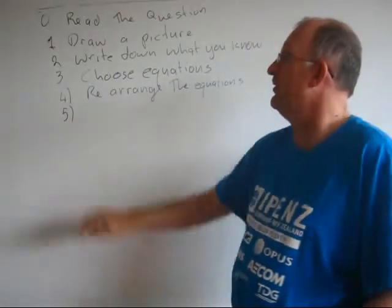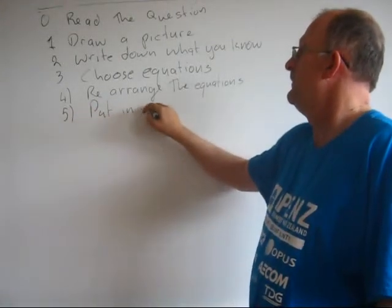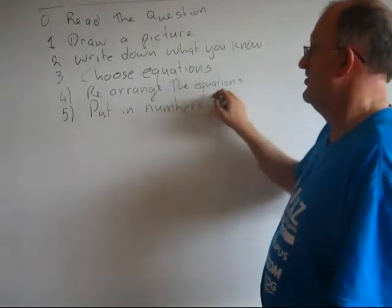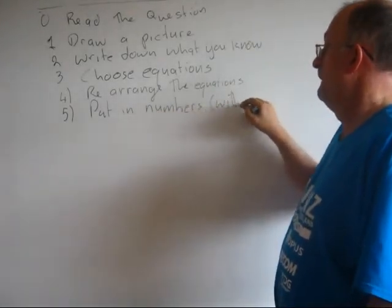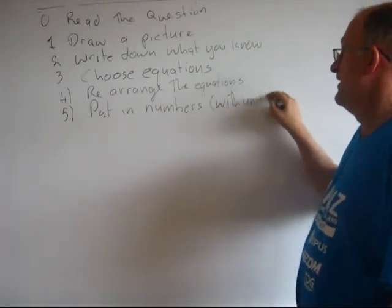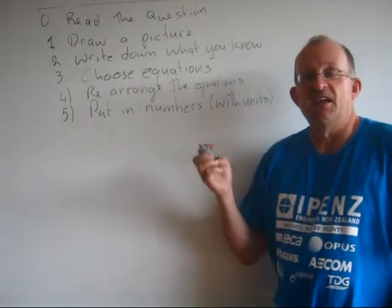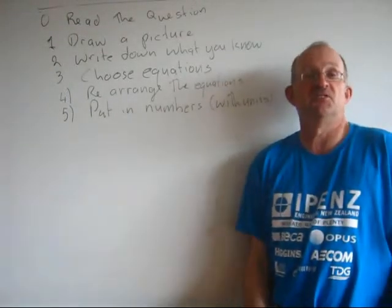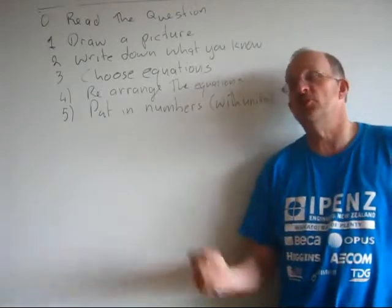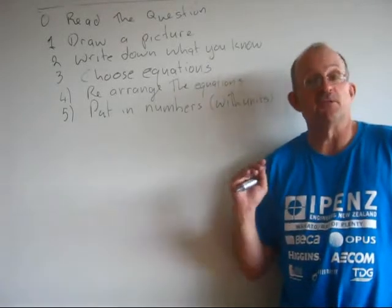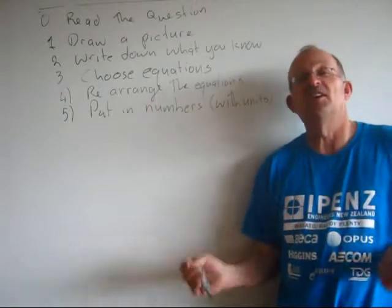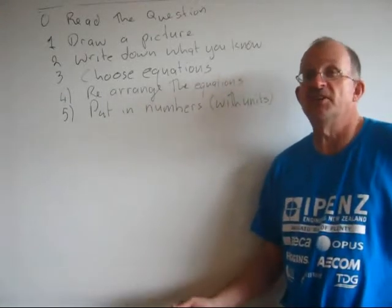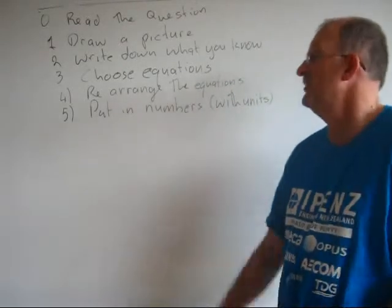Once you've rearranged the equation, put in numbers with units. And being a physicist, I must stress this. In physics, if a number has a unit, then you always write that unit next to that number every time you write it down. It doesn't matter if it's working. Always write it down.